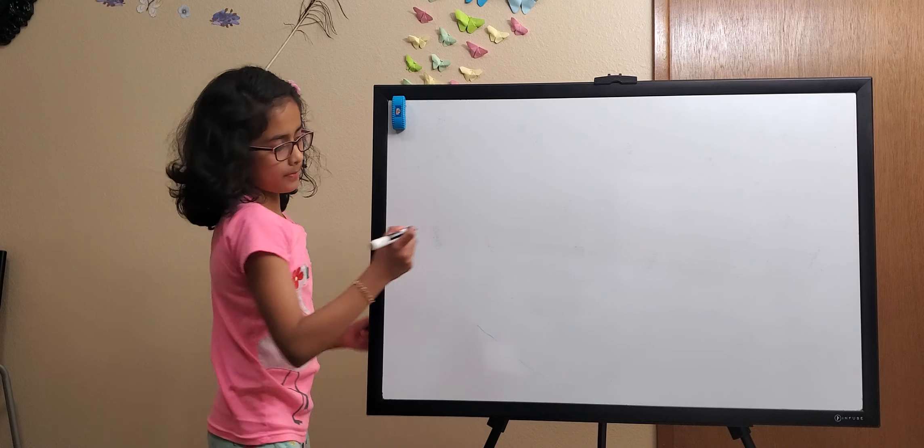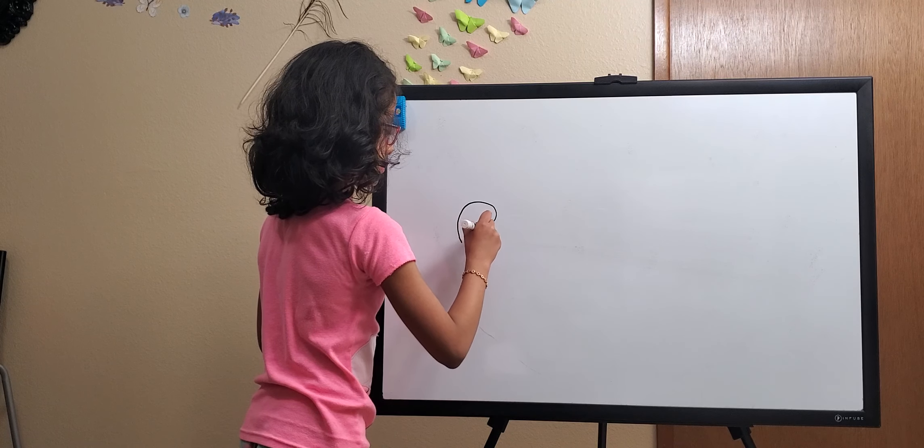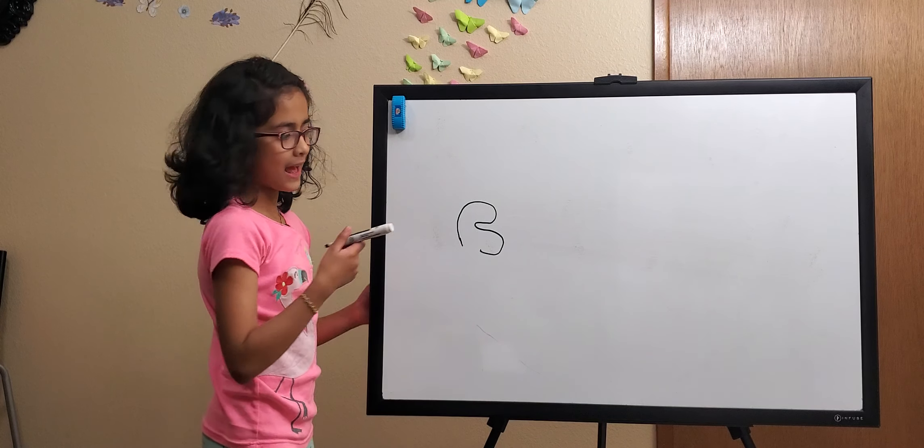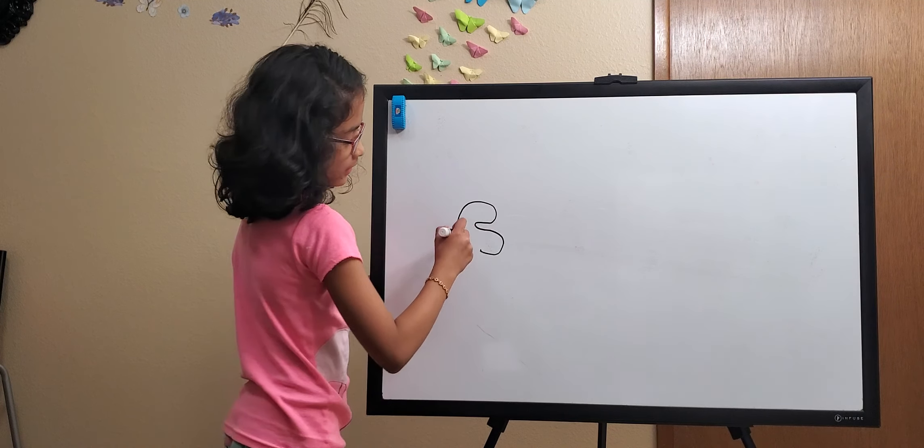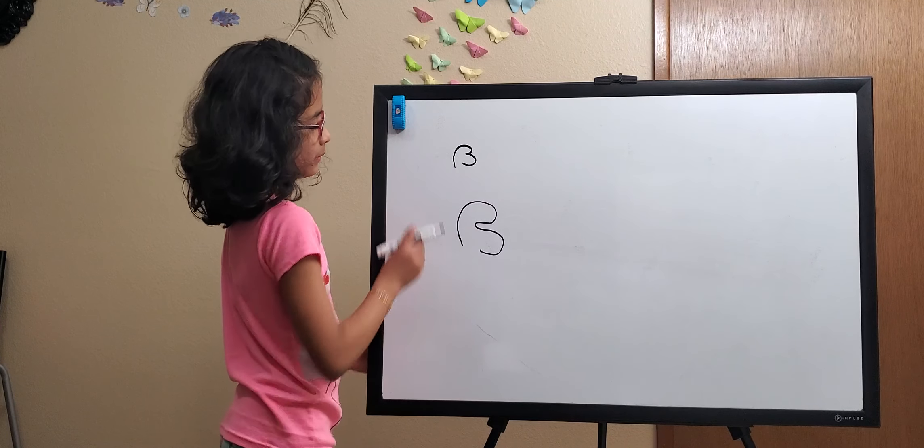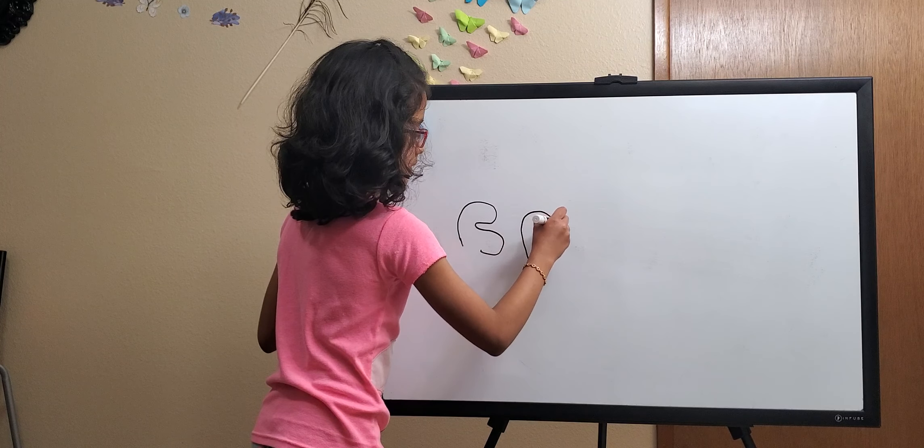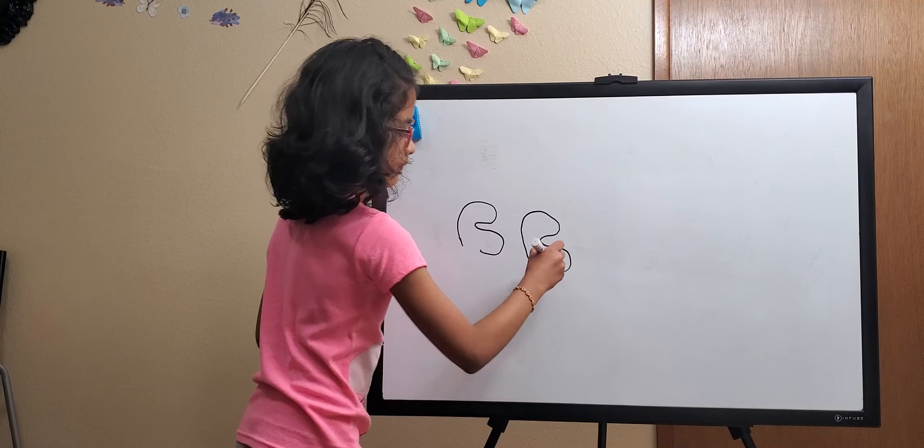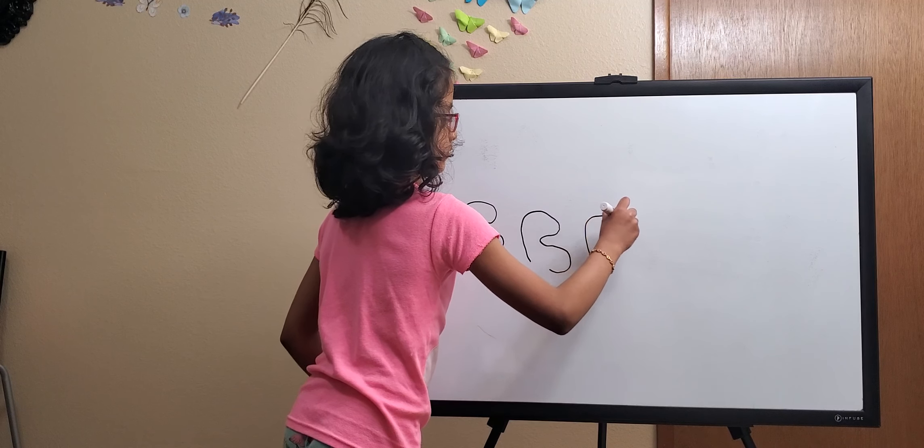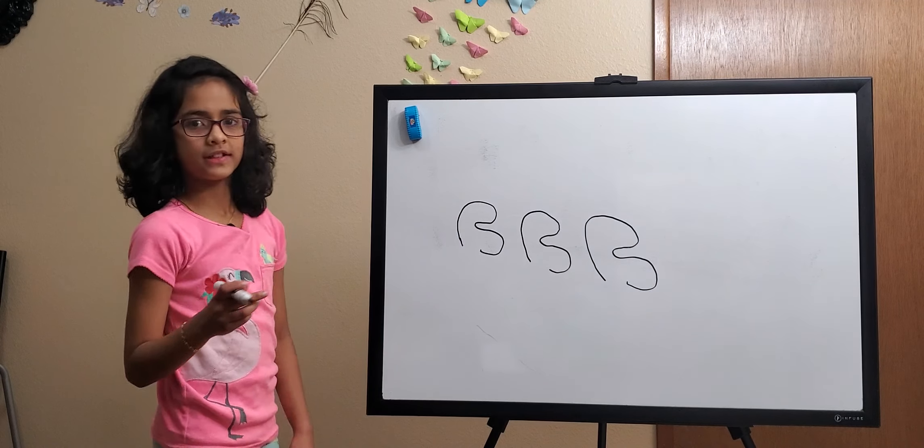The next letter is IBBA. If you remember the letter we learned last time, it actually kind of looks like this, except it was straight. This has a space in the middle. This is the letter IBBA.